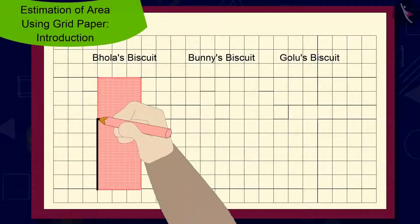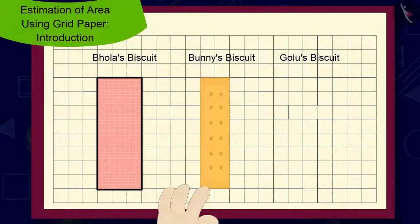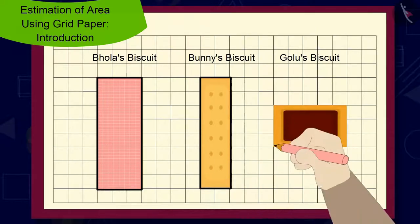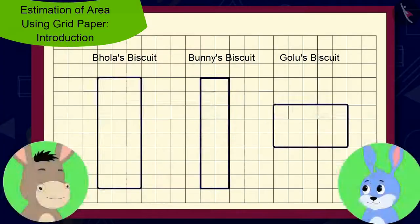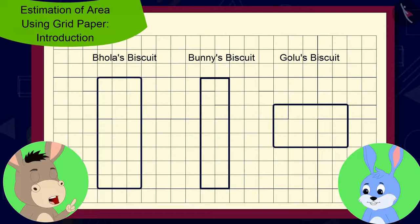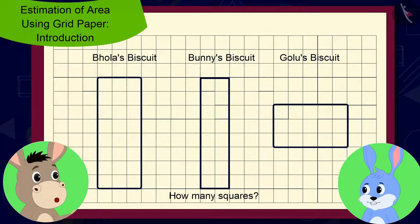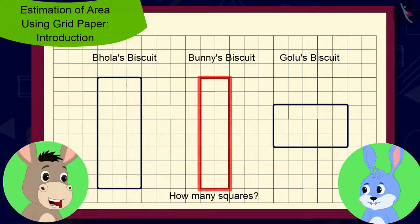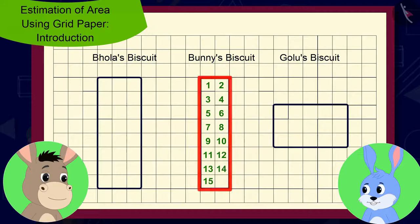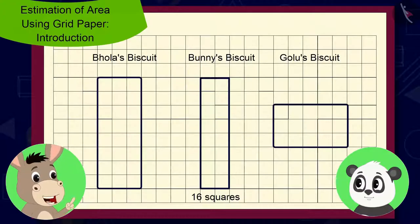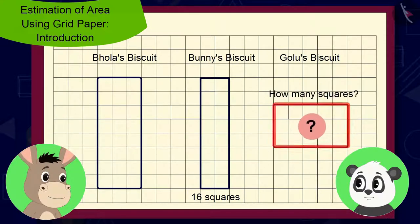Bhoola made the outlines of those three biscuits with a pencil on the grid paper. Bunni, can you tell me how many squares are there in the shape of your biscuit? Bhoola asked Bunni. Bunni quickly counted the number of squares and said, sixteen squares. And Golu, tell me how many squares are there in the shape of your biscuit? Bhoola asked Golu.